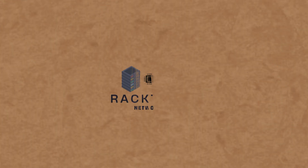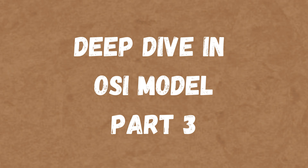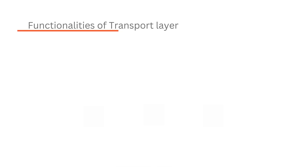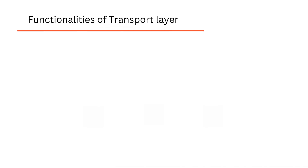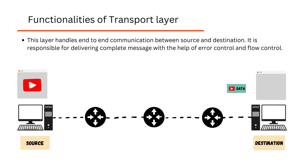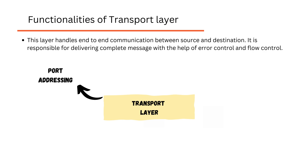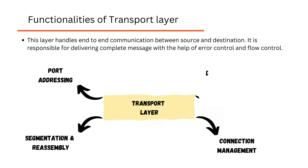Welcome back to Recteon Networks. This is Part 3 of the deep dive into the OSI model — please go through Part 1 and Part 2 first. We will now discuss the transport layer and its functionalities. This layer is responsible for process-to-process or end-to-end communication between the source and destination, ensuring the whole message is delivered intact and in order. The four functionalities of the transport layer are: port addressing, segmentation and reassembly, connection management, and data transmission control.